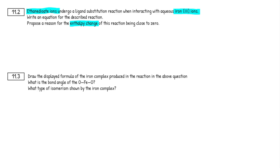Let's start with our aqueous iron 3+ ions — pause the video and think: do you remember what this complex is written as? You always want to show square brackets to denote it's a complex, then the central metal ion — in this case iron 3+. The ligands go in rounded brackets; it's an aqueous complex so it's surrounded by water, and there are six of these because it's an octahedral complex. The charge: iron 3+ plus six lots of zero charge from water ligands gives 3+ overall.